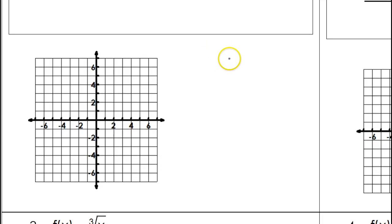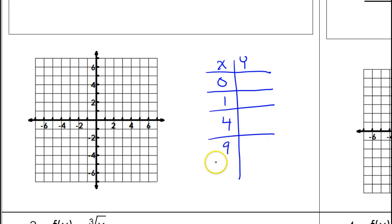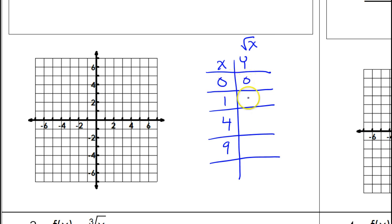The nice thing about graphing a square root function is that you can use the same values for every problem. We are going to start with values you can take the square root of without getting a decimal: 0, 1, 4, and 9. So the y values will be 0, 1, 2, and 3. We will use these same four values at the beginning of every square root function.